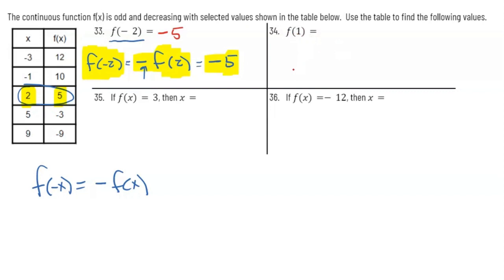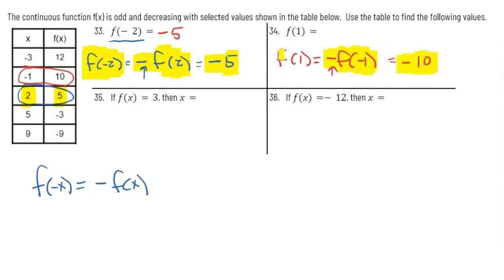Next: what is f(1)? Since the function is odd, f(1) = -f(-1). From the table, f(-1) = 10, so f(1) = -10. Think of it simply: when you're odd, plugging in 1 gives a number, and plugging in -1 gives the same number but opposite in sign. Since f(-1) = 10, plugging in positive 1 gives negative 10.